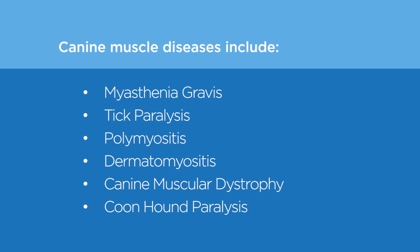Dermatomyositis involves inflammation of canine muscles along with characteristic skin lesions. Degenerative myelopathy is a progressive disease of the spinal cord in older dogs. The disease has an insidious onset typically between eight and 14 years of age and begins with a loss of coordination in the hind limbs.